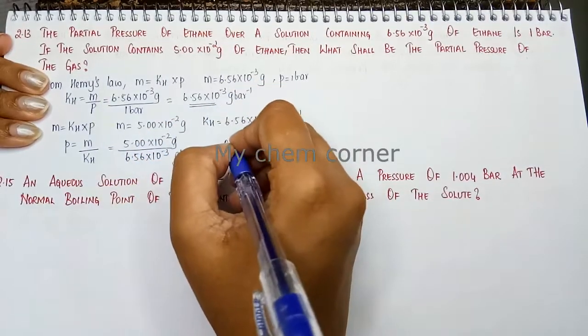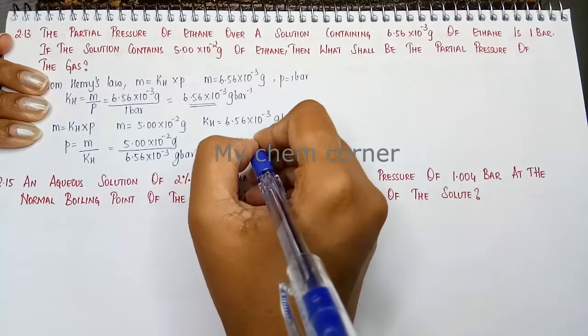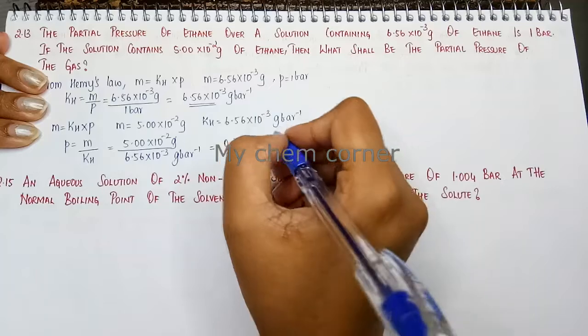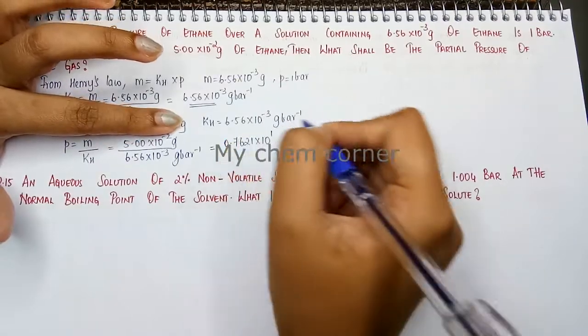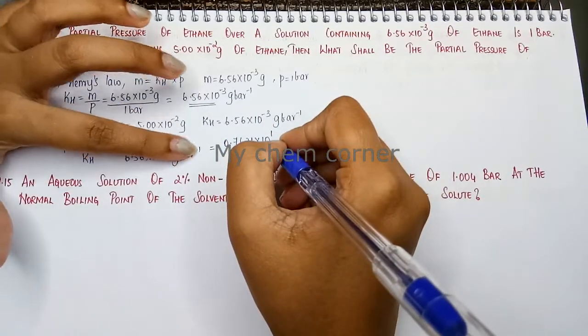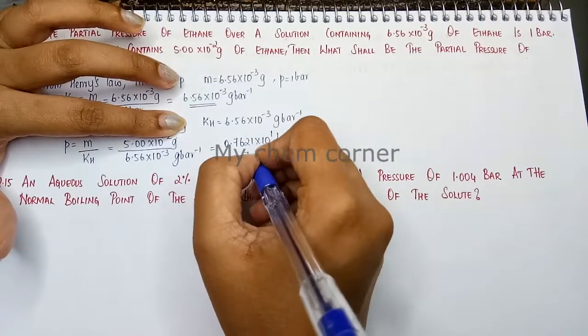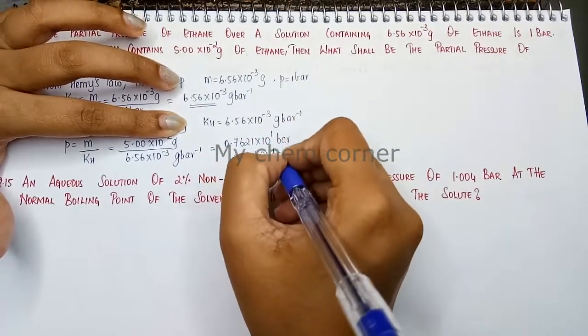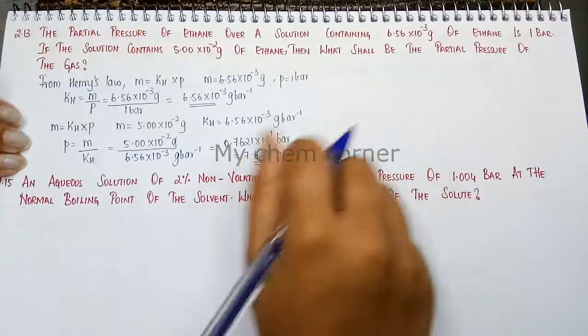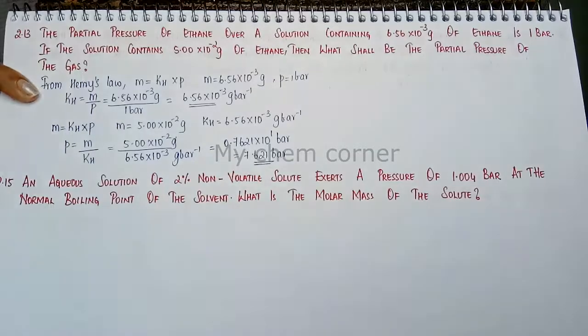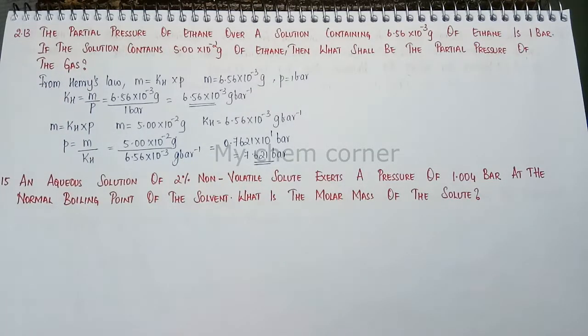When I simplify this, you will get 0.7621 × 10¹. Minus 3 will go up, it will become plus 3. So minus 2 plus 3 will become plus 1 bar. When I simplify this, I will get 7.621 bar, which is the partial pressure of the gas when this many grams of ethane are taken. It's a very simple equation on Henry's law.